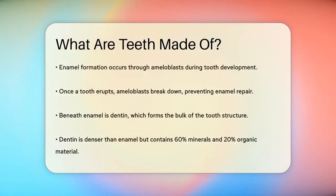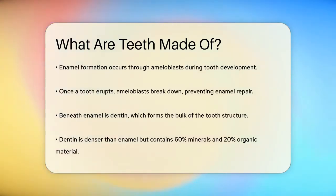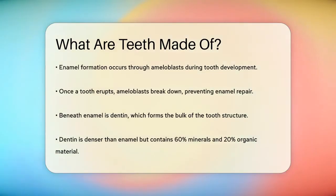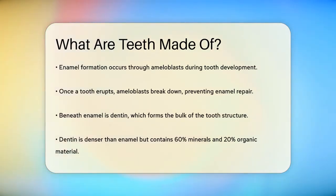Enamel is formed by cells called amyloblasts during tooth development, a process known as amylogenesis. These cells deposit enamel in a highly organized structure of interlocking prisms, giving enamel its remarkable strength. However, once the tooth erupts, the amyloblasts are broken down and the enamel loses its ability to repair or regenerate itself.